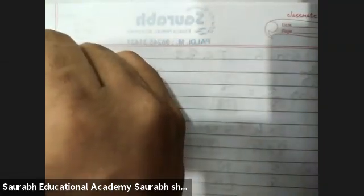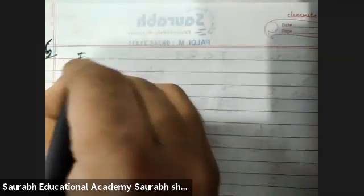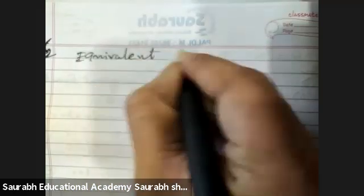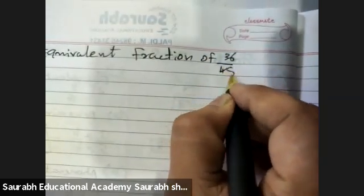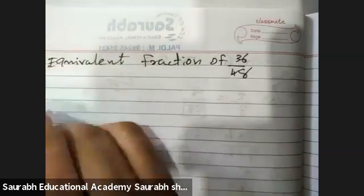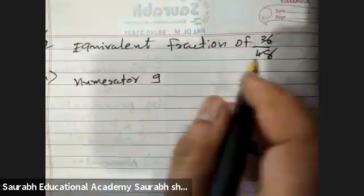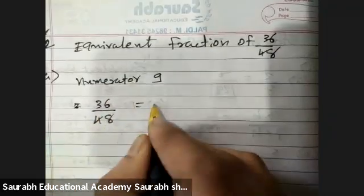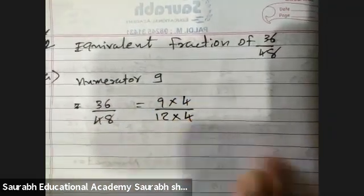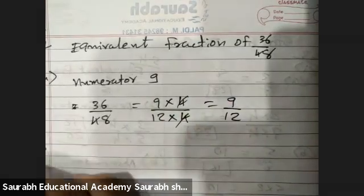Sum Number 5. Find the equivalent fraction of 36 upon 48, A, numerator 9. Nine fours, twelve fours. I want numerator 9. Four fours cut. So the answer will be 9 upon 12.